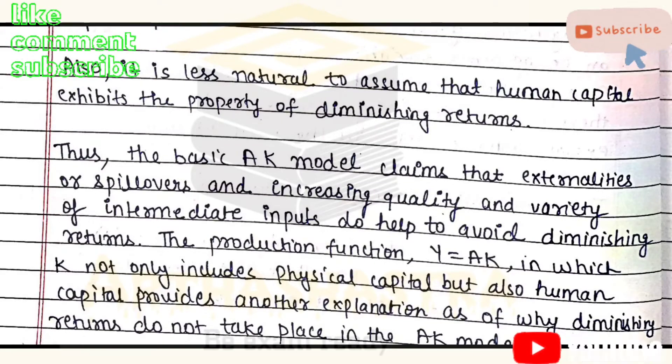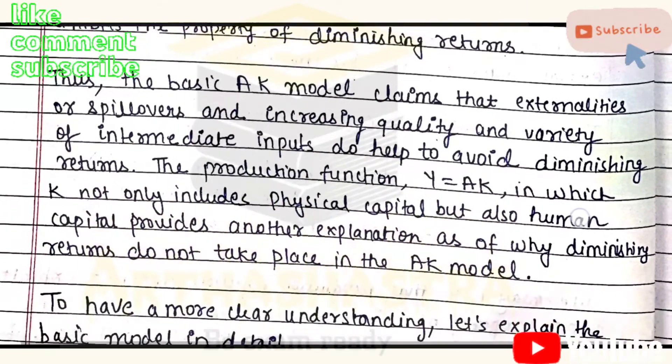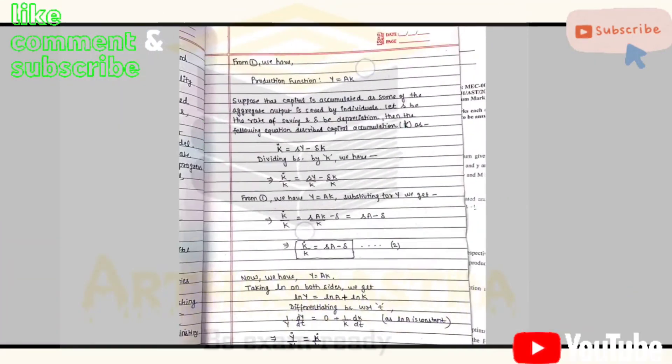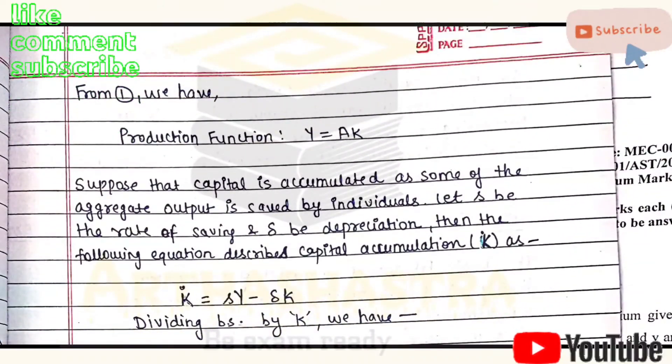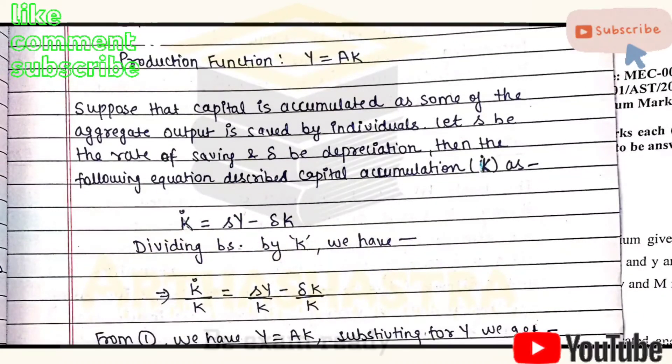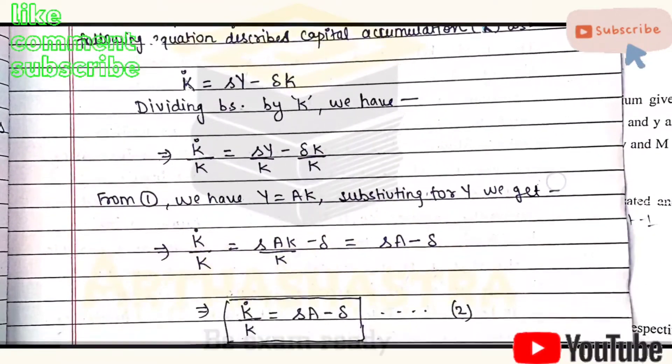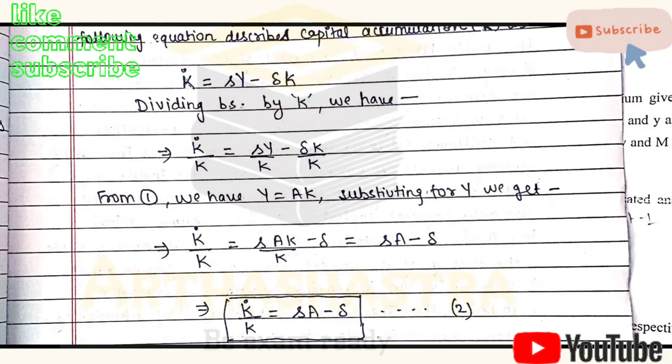This is a 20 marker question in the assignment, but in examinations you will rarely find a 20 marker question exclusively on AK model. It comes along with any other endogenous growth theory model, so you have to prepare it along with any other model as well. Solely AK model will not help you secure 20 marks in term end examinations. It's because it is just a basic model or you can say the foundation model of the endogenous growth theory.